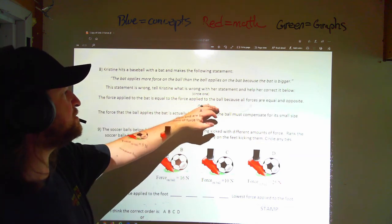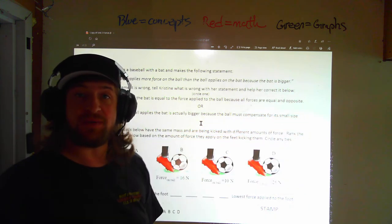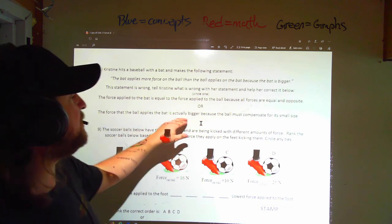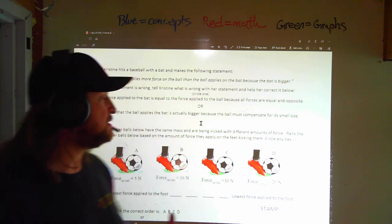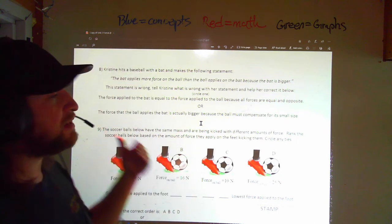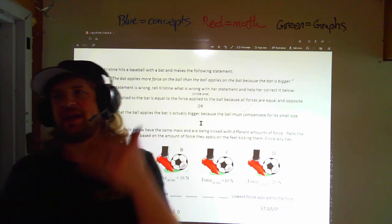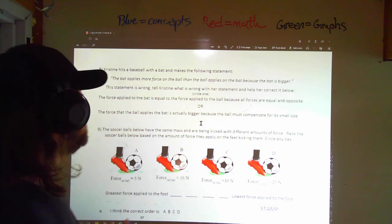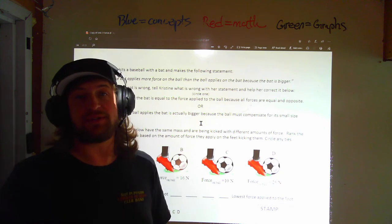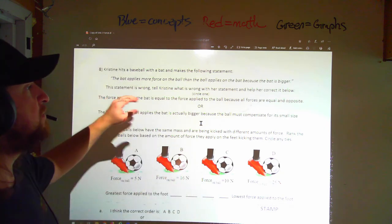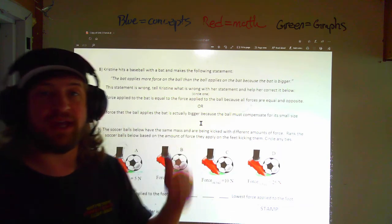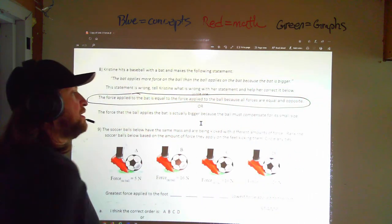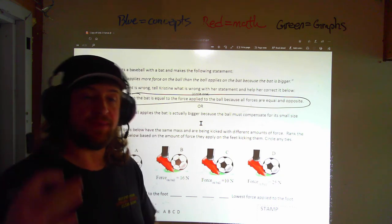So we can have some options here. The force applied to the bat is equal to the force applied to the ball because all forces are equal and opposite. That's one statement that could be correct. Or, we could put, the force that the ball applies to the bat is actually bigger because the ball must compensate for its small size. So we've got two options there. And one kind of rule of thumb you can think about here is objects are inanimate. They don't think. They don't go, I'm a tiny little ball. I must make up for the fact that I'm a tiny little ball. No. Instead, they just follow simple rules of physics. And one of them is one of Newton's laws that says, for every force, there is an equal and opposite reaction force. Whenever two objects collide, they both experience equal forces. However, one of those objects is probably going to experience a larger acceleration because it has a smaller mass.